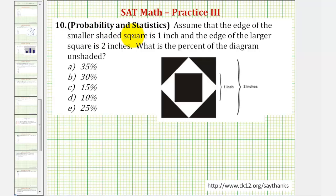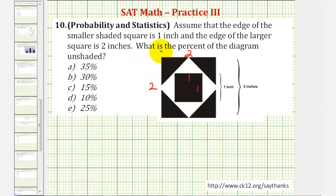Welcome to a practice SAT math question. Assume that the edge of the smaller shaded square is one inch, so this would be a one by one square. And the edge of the larger square is two inches, so this outer square is a two by two square. We want to determine what is the percent of the diagram unshaded.